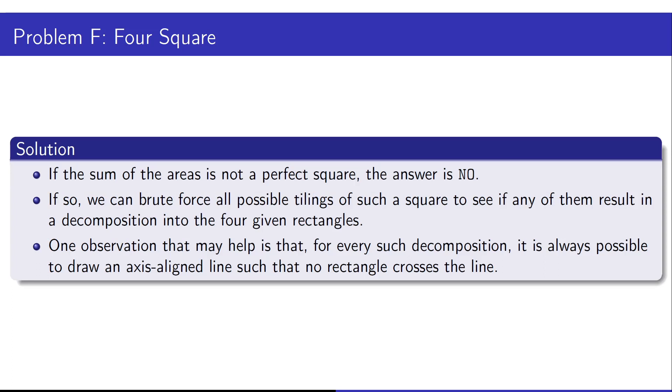To start out in tackling this problem we can first determine if it's even possible to assemble a square with a valid side length such that the sum of the areas of the rectangles matches the area of the square. So if the sum of the areas is not a perfect square then the answer has to be no.